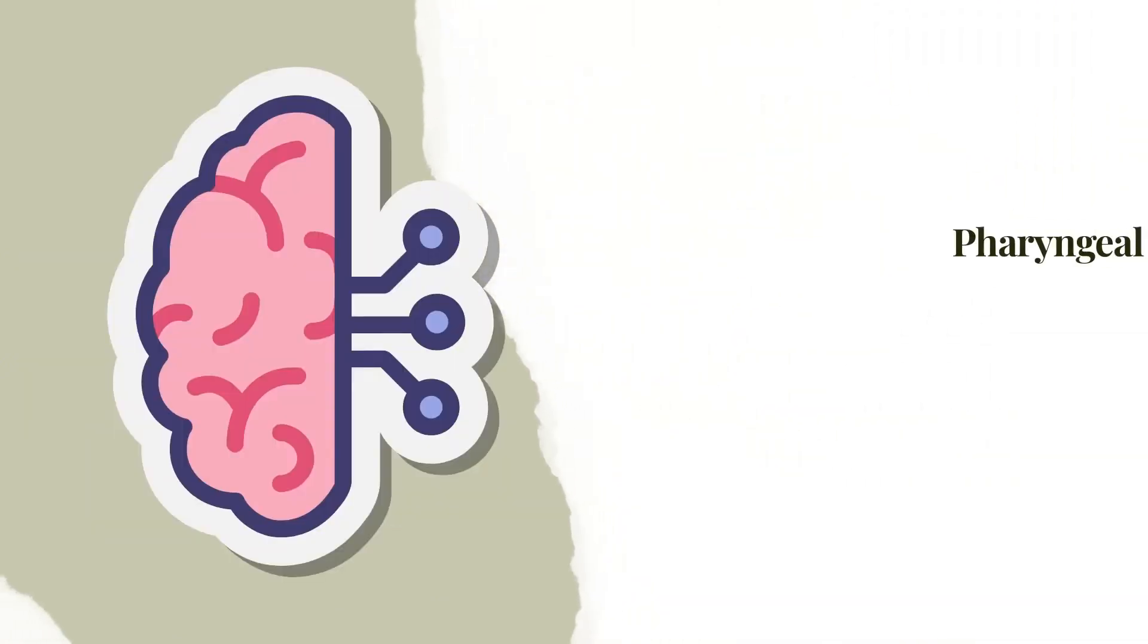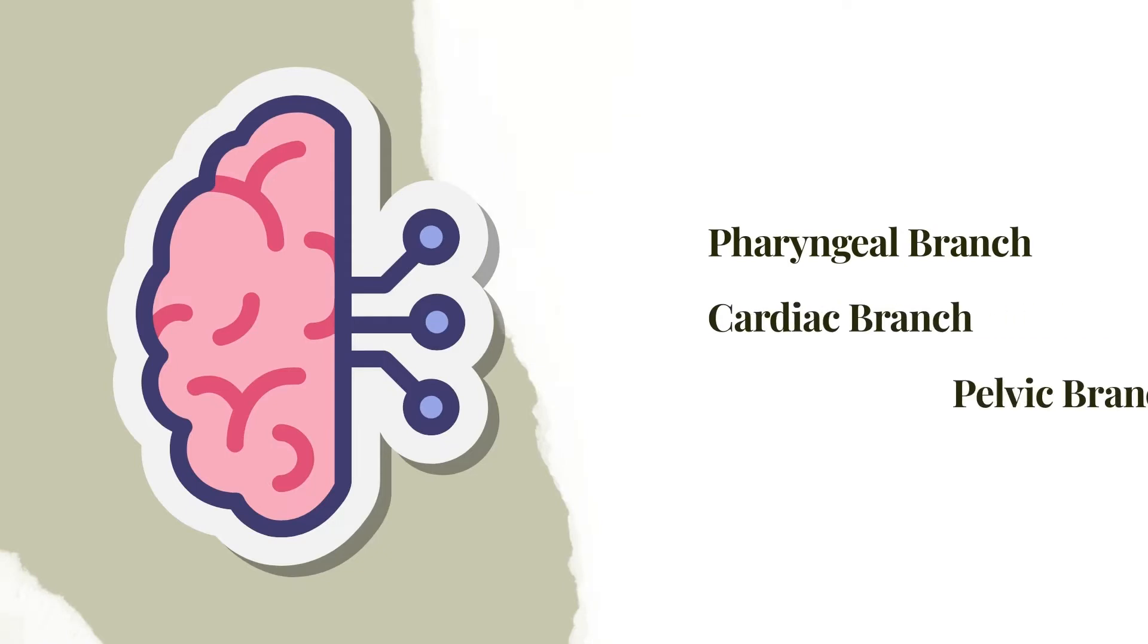The three branches of the vagus nerve are pharyngeal branch, cardiac branch, and the pelvic branch.